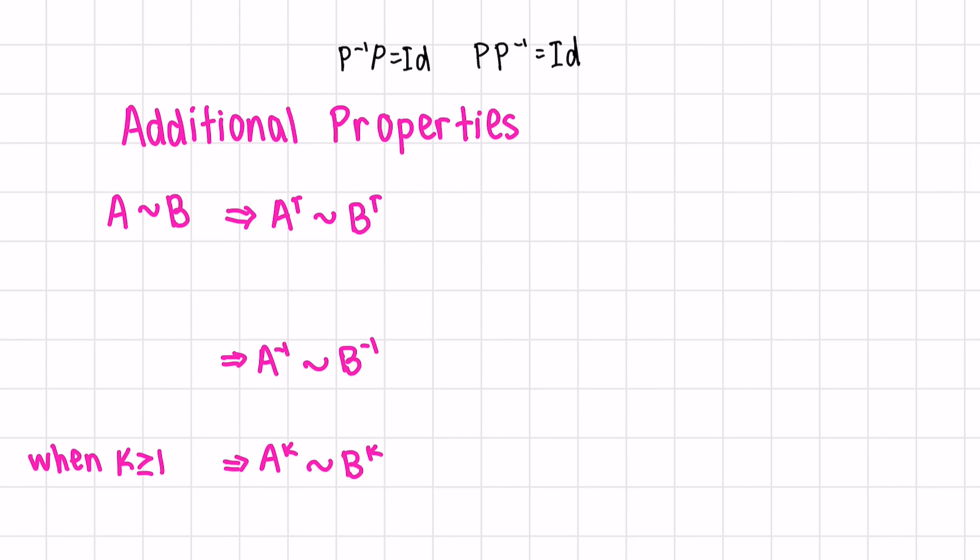We also have some additional properties. If A is similar to B, then A transpose is similar to B transpose. Let's show why this is true. First of all, let's write out what A is similar to B means. B can be written as P inverse AP. Then let's transpose both sides.